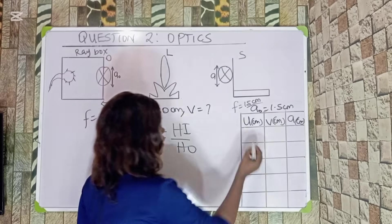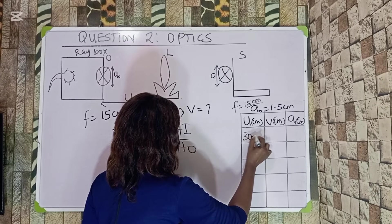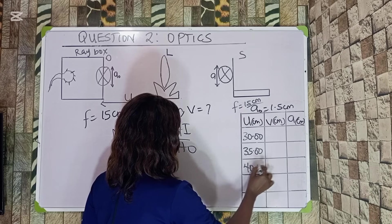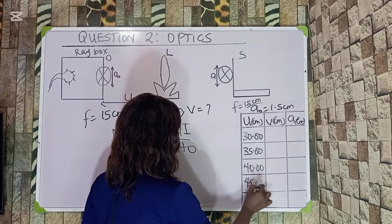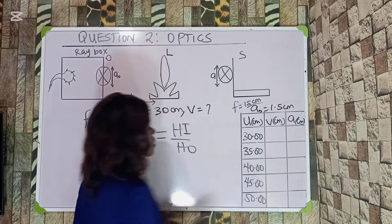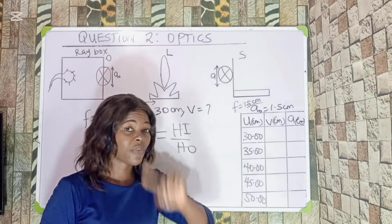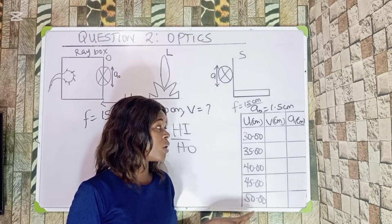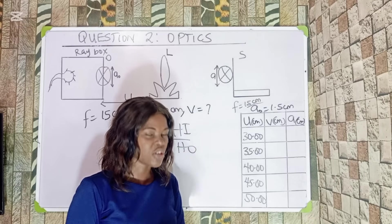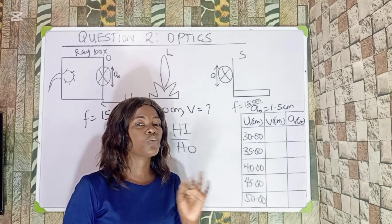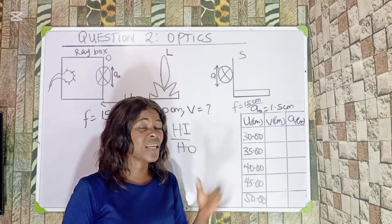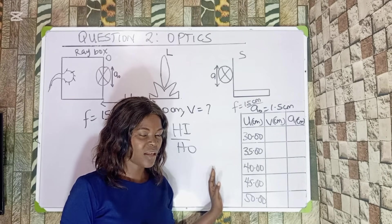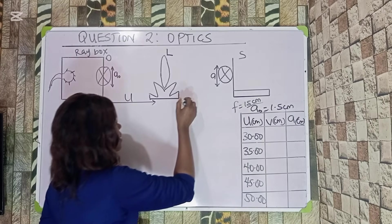The object distance u will vary: 30.00, 35.00, 40.00, 45.00, and 50.00 centimeters. When I perform these calculations, the values will be close to what I actually got when I performed the practicals. Note that these are estimated values — they are not fixed, and marks are awarded based on what you have.